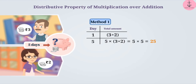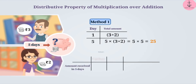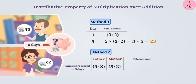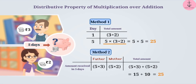Method 2: first find the total amount given by your father in 5 days and the total amount given by your mother in 5 days, then add these two values. That is, find the value of 5 into 3 plus 5 into 2. The solution is 15 plus 10, which is 25. Isn't this equal to the first solution? Yes. So we can say that 5 into (3 plus 2) is equal to 5 into 3 plus 5 into 2.